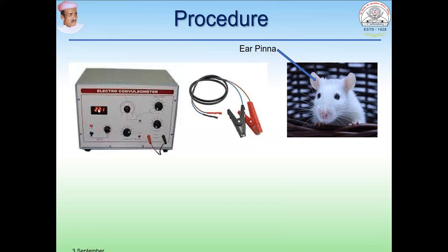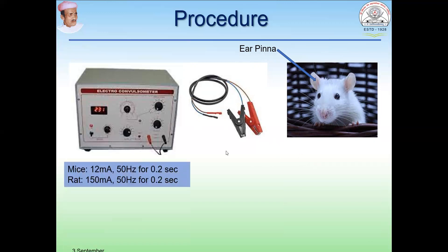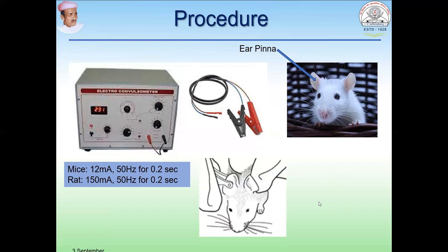First, take the instrument and attach both electrodes to the ear pinnae of the rat. If you are using mice, set the instrument at 12 milliamperes, 50 Hz, and a time of 0.2 seconds. If you are using rats, the current intensity should be 150 milliamperes, 50 Hz, and 0.2 seconds time interval. As soon as you start, the current will pass into the body of the animal, and after 0.2 seconds it will automatically stop. This picture shows how it is induced.